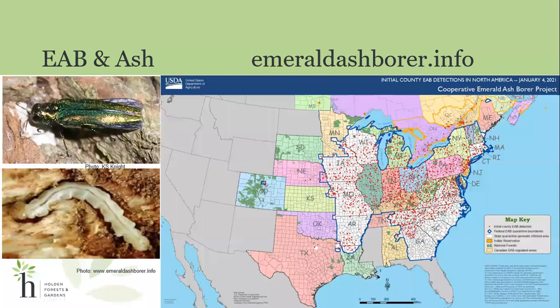You can see our emerald ash borer beetle is a bright green insect that's no longer than a penny, and it's originally from Asia, co-evolving with Asian ash, and was brought into America located near southeast Michigan near Detroit, likely from cargo shipping containers. The larvae of the EAB beetle develop underneath the bark of the ash tree, eating away at the most important part — the cambium layer — which reduces its ability to process nutrients throughout its system.